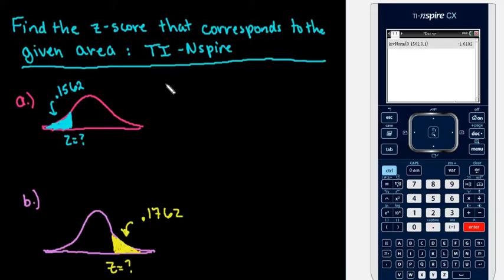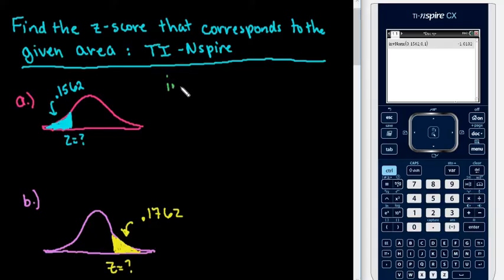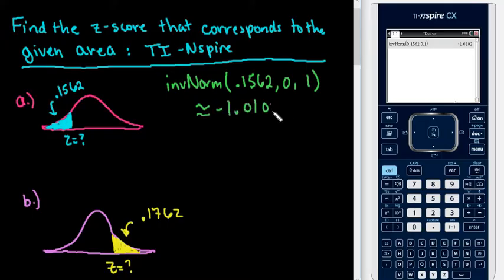So for this, just in case you can't really see, what we were typing in is we typed in the inverse norm was what we selected, and then we typed in the area .1562, the 0 and the 1, and the 0 and the 1 is the mean and the standard deviation of the standard normal model, and we end up with approximately negative 1.0102.